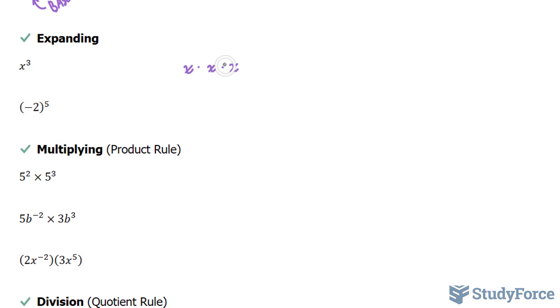These dots represent multiplication, but there are other ways to represent multiplication. These x's could have been any number — it could have been a 5, and in that case you would say 5 times 5 times 5.